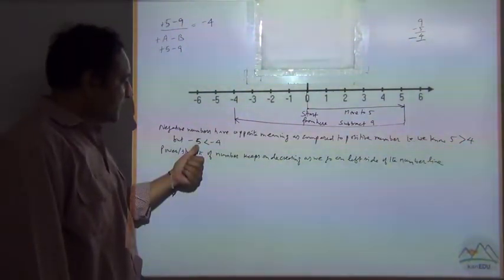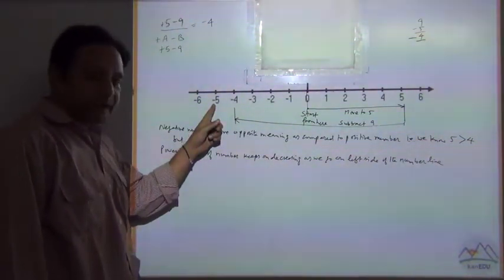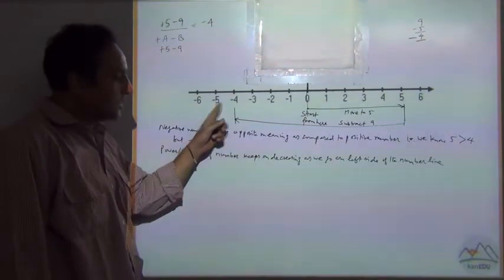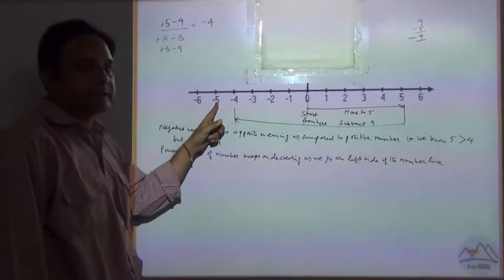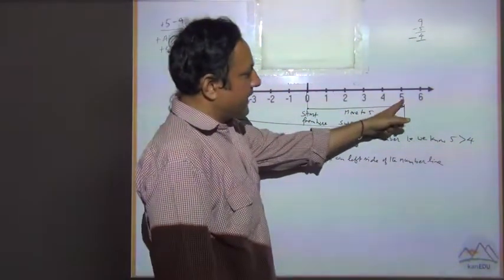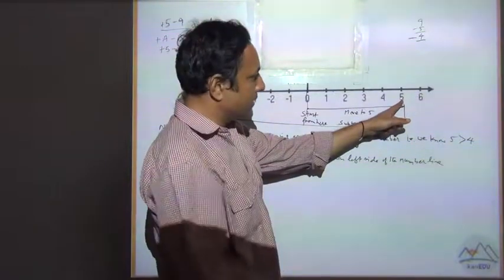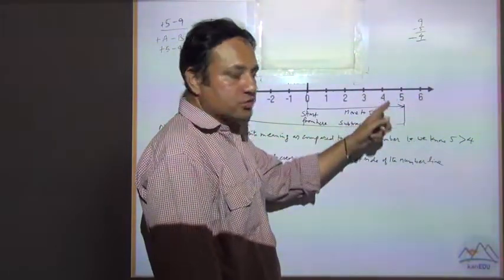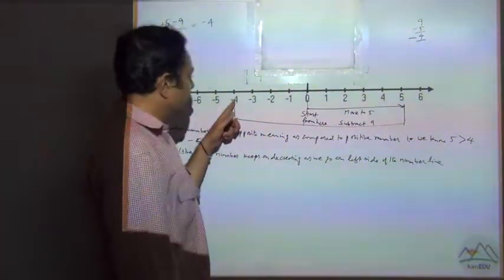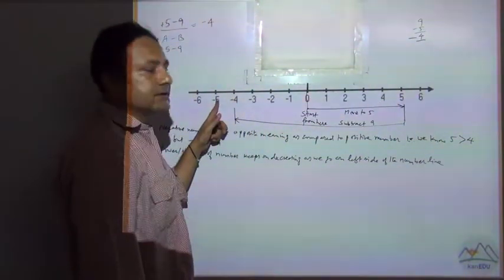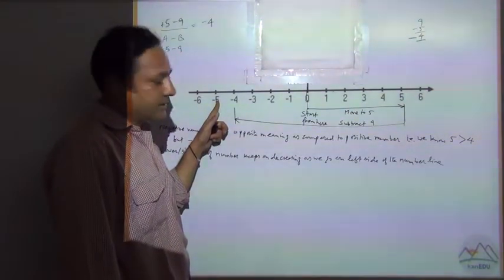That's why minus 5, which is on the left side of minus 4, has less power — so it is smaller. Here, 5 is after 4 on the positive side, so its power is more and 5 is greater than 4. But minus 5 is less than minus 4.